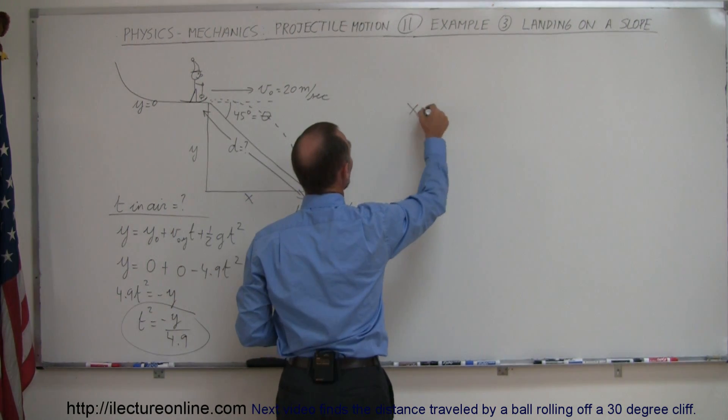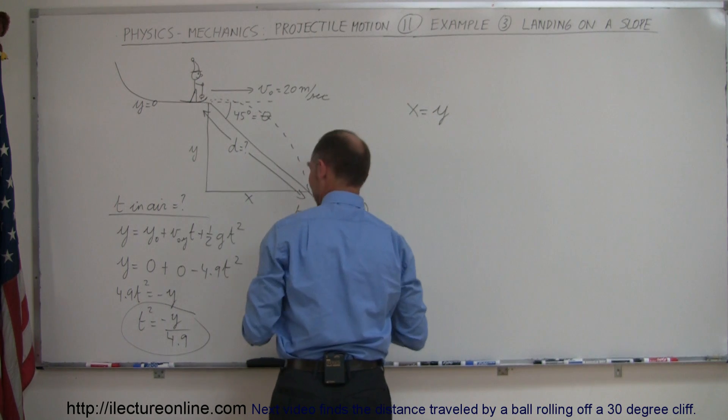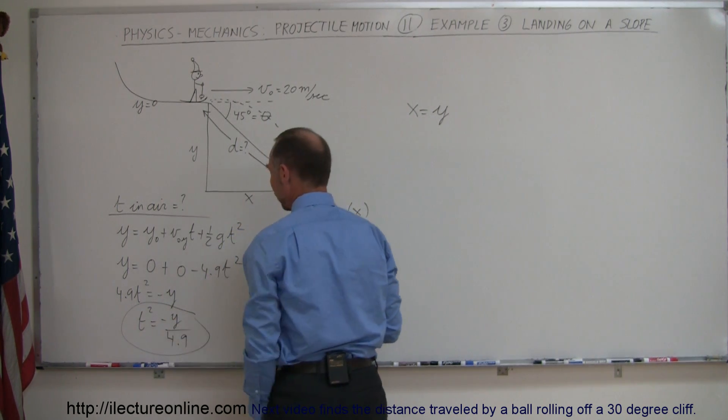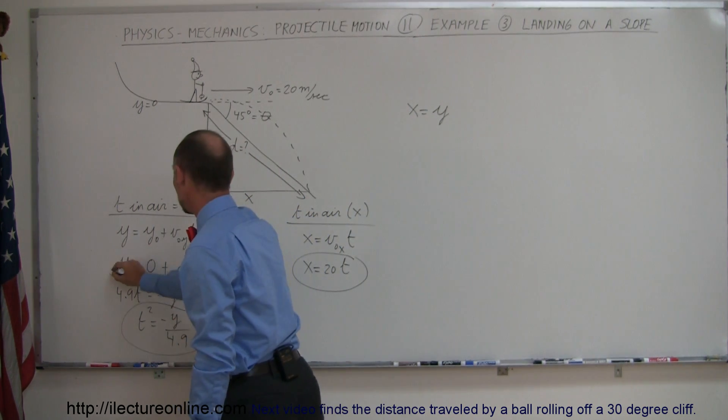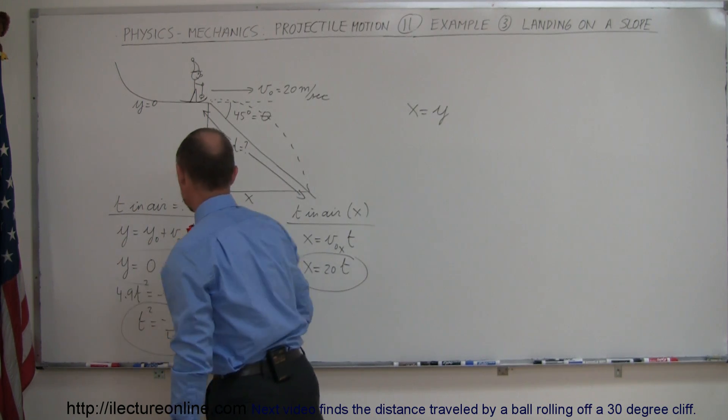we know that x and y must be the same no matter where on the slope he lands. So we can say that x must equal y, and therefore we can say, in that respect we can set these two equations equal to each other.